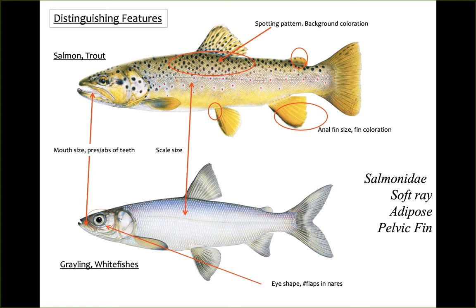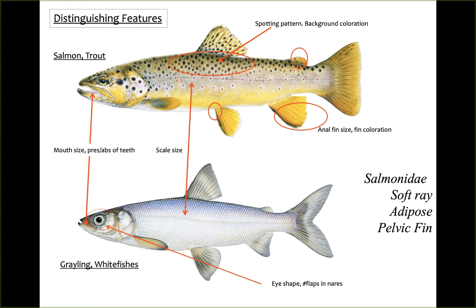Mouth size and presence or absence of teeth — think whitefish versus the rest of Salmonids. Anal fin size will be used to distinguish Pacific salmon versus trout. Large scales, like those in grayling or whitefishes, compared to smaller scales in salmons or trout. Basibranchial teeth — look at cutthroat versus rainbow trout for those. Eye shape is a common area to determine whether you have a whitefish, and one versus two flaps on the nare, or nostril. Read section 19.4 in your text and answer questions in the handout — these will be fair game on exams or your quiz, due at the end of the week.